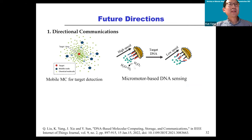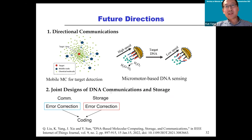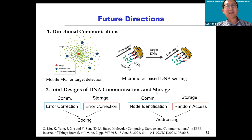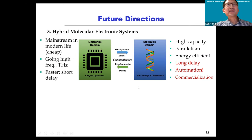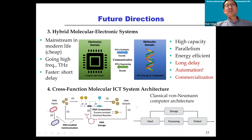And finally, I'm going to look into some future directions. First of all, directional communication mainly at the wireless aspect, and also joint design of communication and storage. So this is very important. In order to make our molecular communication or storage commercialized, automation is very important. And probably in the future we can combine the computing, communication, and the storage together into this exciting cross-function ICT molecular ICT system, or probably a computer.